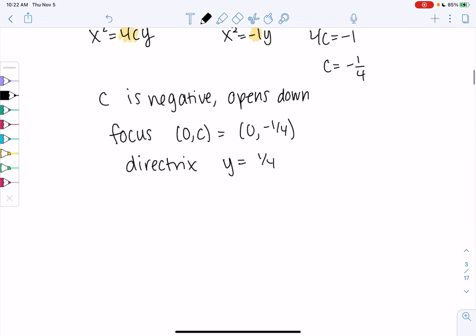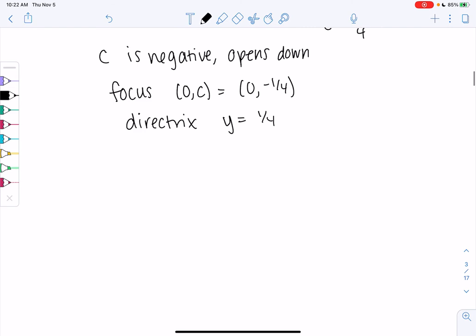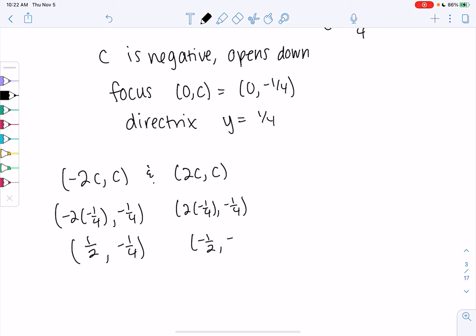So I'm going to find those two points to help me graph. We have (2c,c) or (-2c,c) and (2c,c). I usually just find one and then the other is really fast. So negative 2 times negative 1 fourth gives me 1 half and then c is negative 1 fourth. So my x value is 1 half and my y value is negative 1 fourth and the other one will just be the opposite. So 2 times negative 1 fourth. Negative 1 fourth stays the same. So the x value is negative 1 half. y value stays negative 1 fourth. And this is enough to graph.